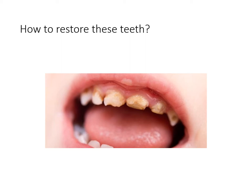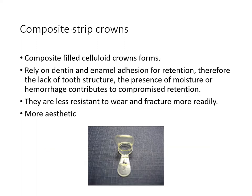When we use composite resin to achieve full coverage, it is called a strip crown, also known as celluloid crown forms. We fill this crown form with composite resin, place it over the tooth, cure it, then remove the celluloid crown. The composite resin takes the shape of the tooth and retains via micro-mechanical retention from residual dentine and enamel. These restorations are less resistant to wear and fracture, but are highly aesthetic because we use composite resin.